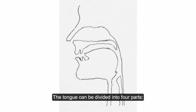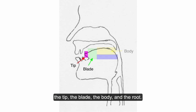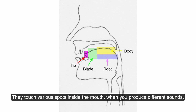The tongue can be divided into four parts: the tip, the blade, the body, and the root. They touch various spots inside the mouth when you produce different sounds.